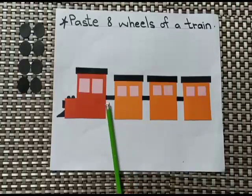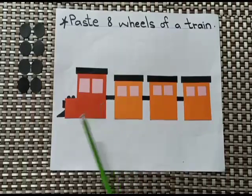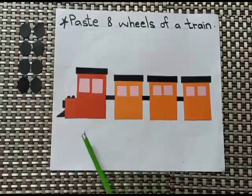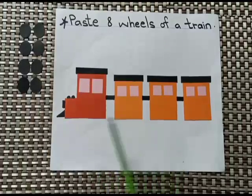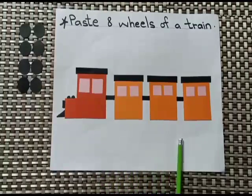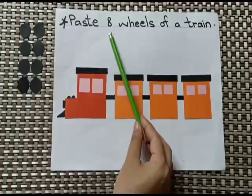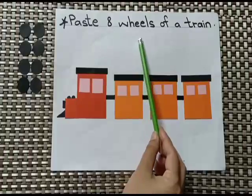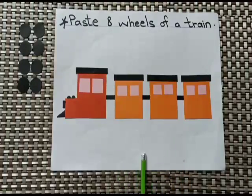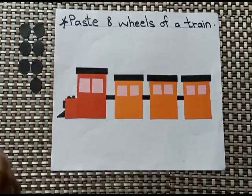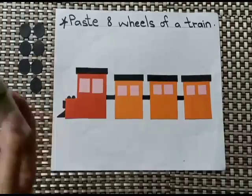You have to do this activity with the help of your mama. This is a train, but the wheels are missing. You have to paste a total of eight wheels on the train. I'm pasting the wheels now — I'm taking this glue stick for pasting.